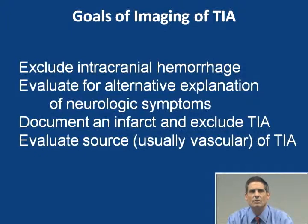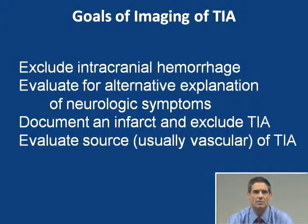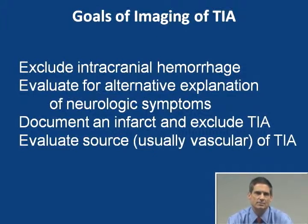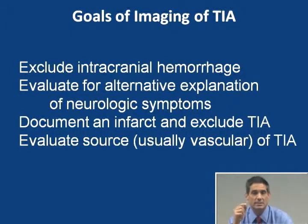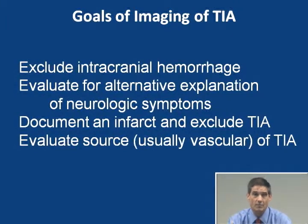To summarize TIA imaging goals: exclude intracranial hemorrhage; evaluate for alternative explanations for neurologic symptoms; document any infarct (which reclassifies the patient as stroke); and evaluate the vascular source of the TIA. If you document an infarct, you've excluded a TIA and the patient is now a stroke patient.